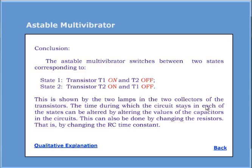This is shown by the two lamps in the two collectors of the transistors. The time during which the circuit stays in each of the states can be altered by altering the values of the capacitors in the circuits. This can also be done by changing the resistors, that is, by changing the RC time constant.